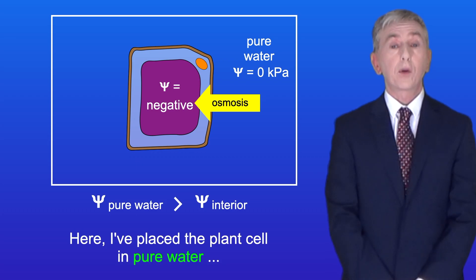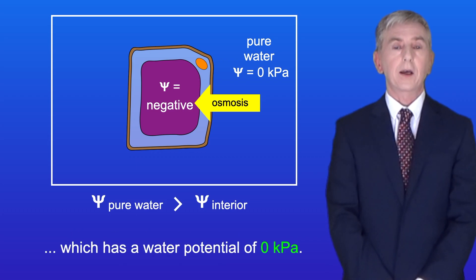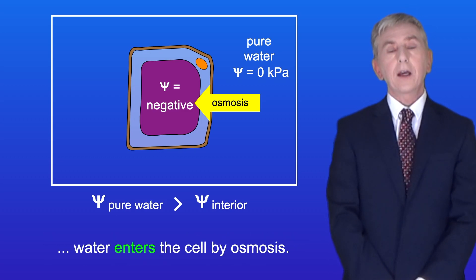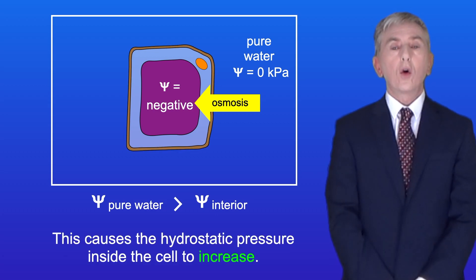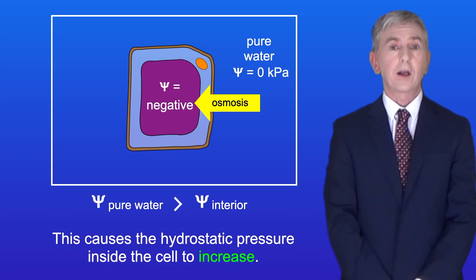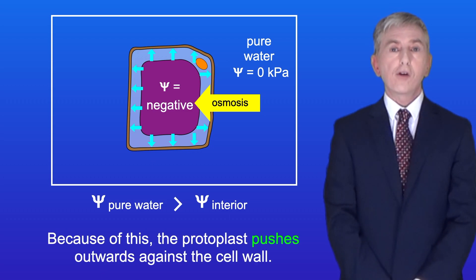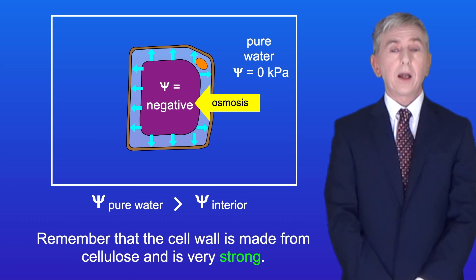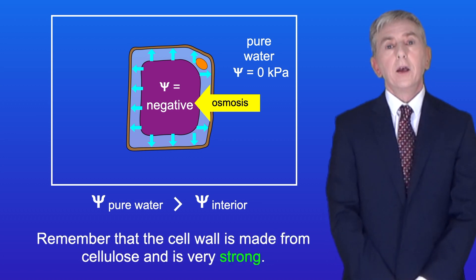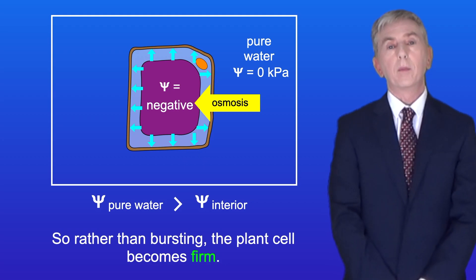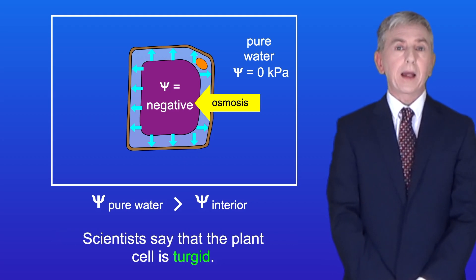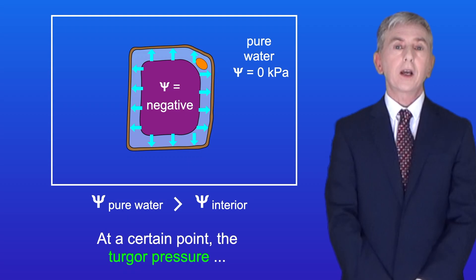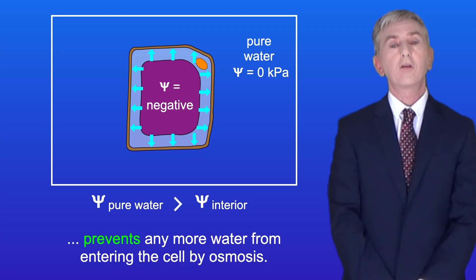Here the plant cell is placed in pure water, which has a water potential of zero kilopascals. Because the water potential outside is greater than inside, water enters the cell by osmosis, causing the hydrostatic pressure inside the cell to increase. The protoplast pushes outwards against the cell wall. Because the cell wall is made from cellulose and is very strong, rather than bursting, the plant cell becomes firm — scientists say the cell is turgid and the internal pressure is called turgor pressure. At a certain point the turgor pressure prevents any more water from entering the cell by osmosis.